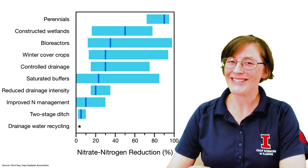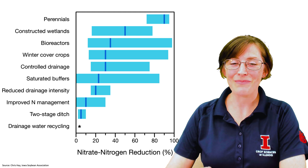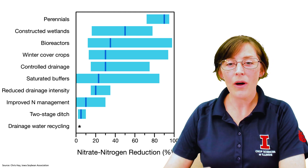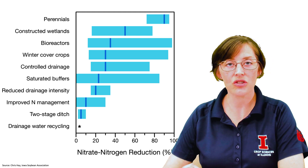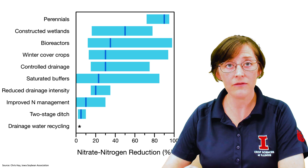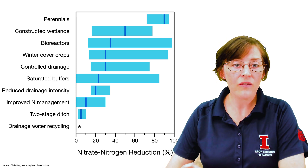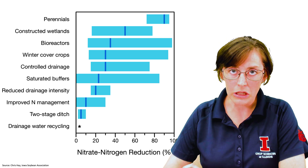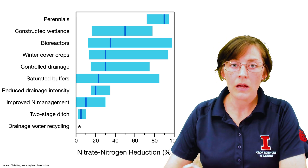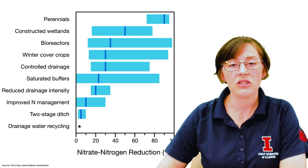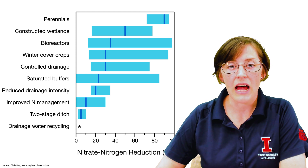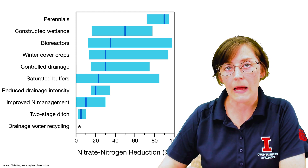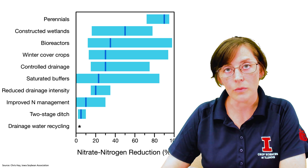Since this is a conservation drainage practice, you may be wondering how well controlled drainage works to reduce nitrogen loss from your field, or how effective the practice is for keeping water clean. Controlled drainage is generally rated as reducing nitrogen loss by about 30 to 40 percent on an annual basis.